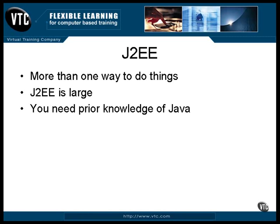To take this course, you should already know how to program in Java. The assumption is made throughout that you know how to write Java classes and that you can read and understand Java code. To understand J2EE, you will need to be familiar with the structure of a class, how its data and methods work, and how a class source definition is compiled into a class file. You should also understand how that class definition is loaded and instantiated into an object for execution.